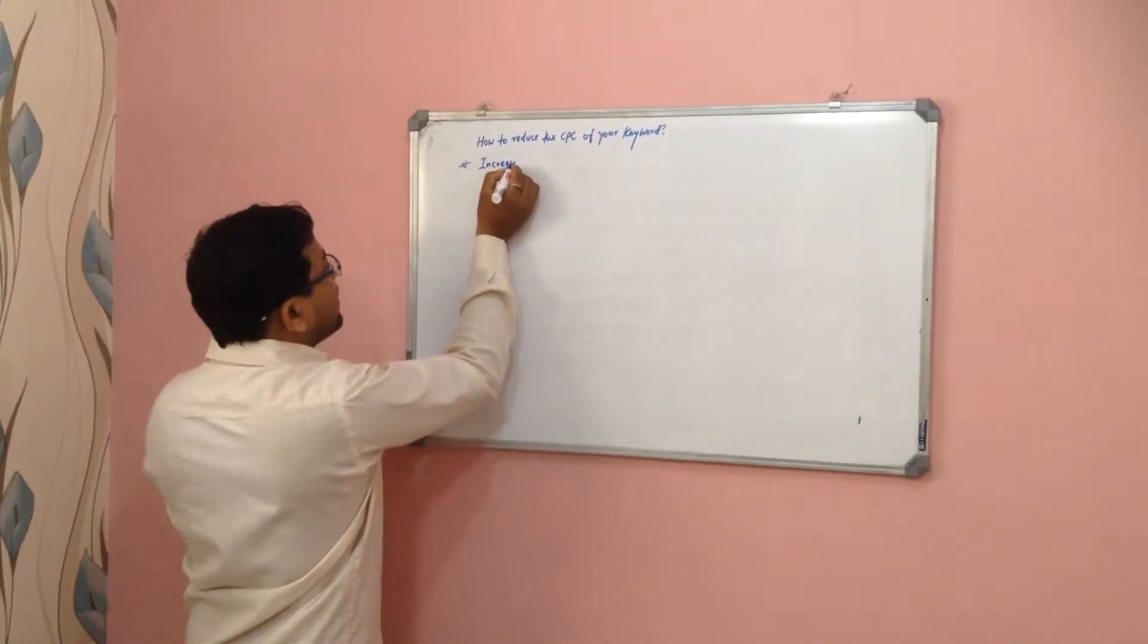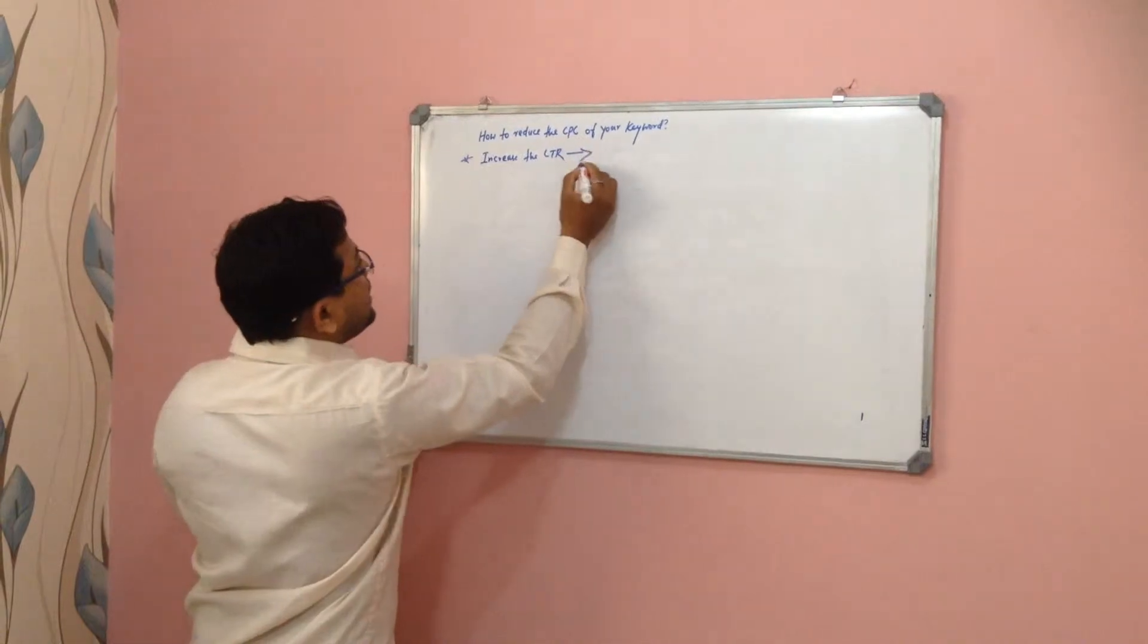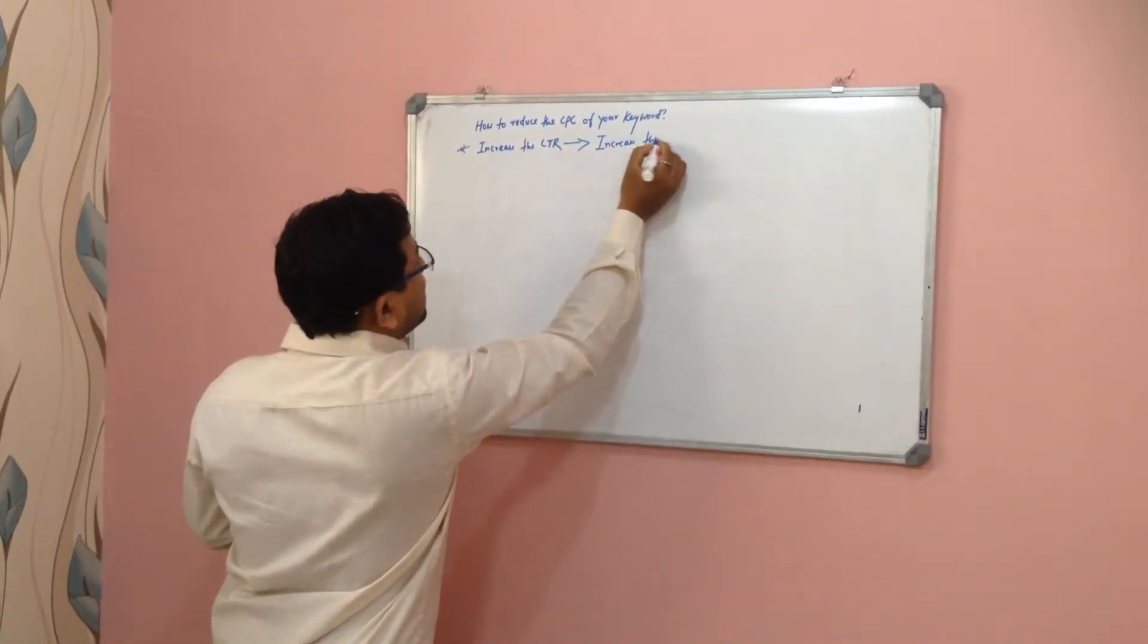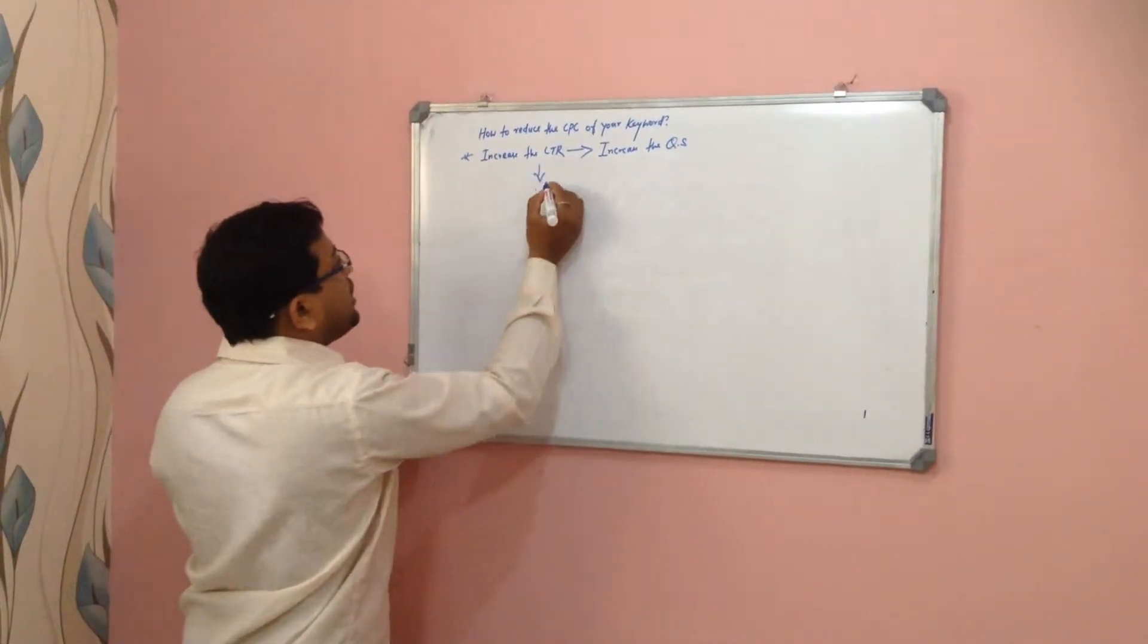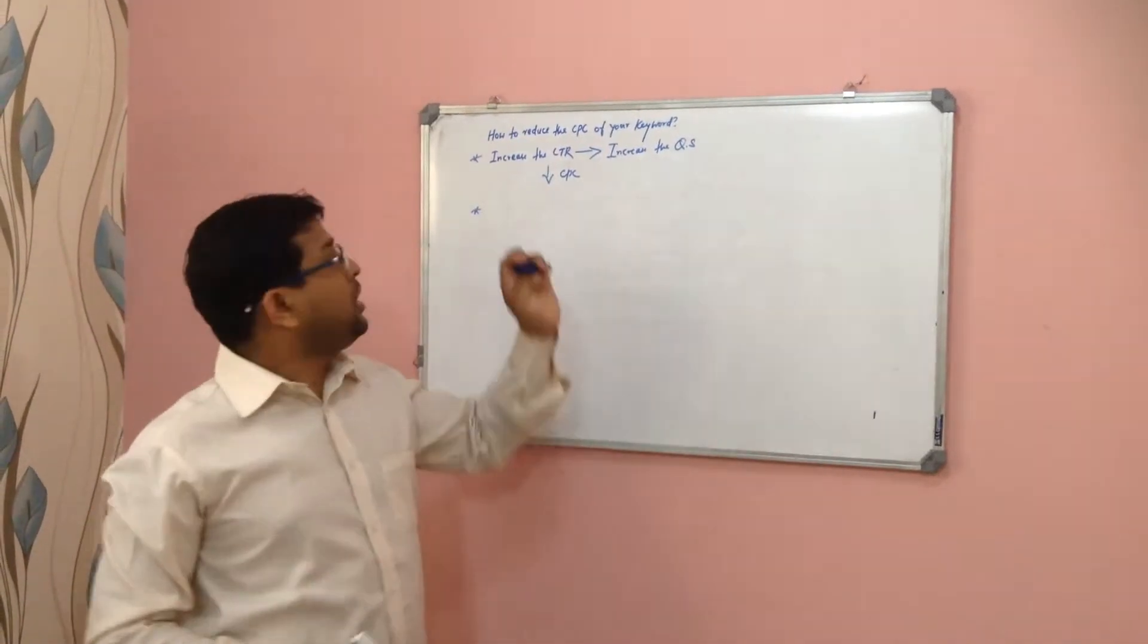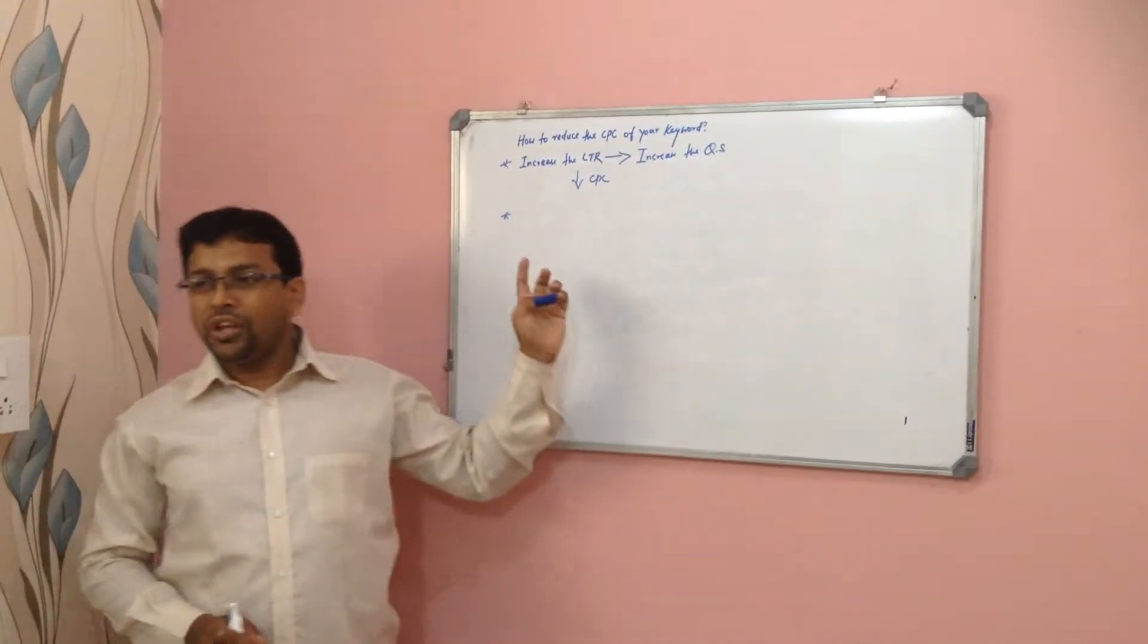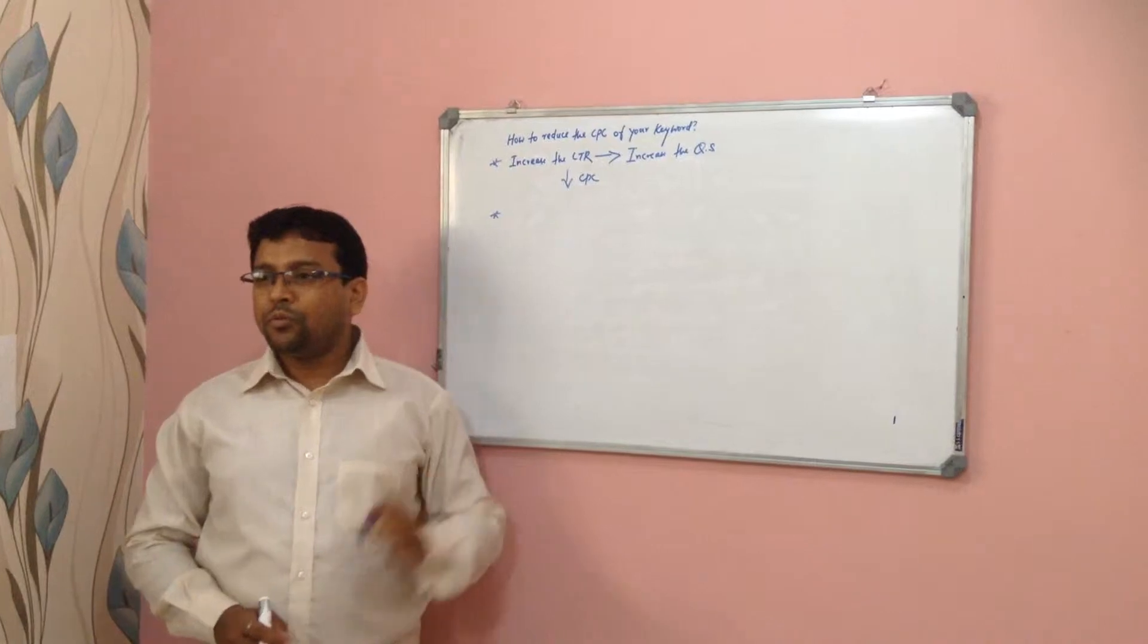Try to increase the CTR, and if you increase the CTR, it will increase the quality score. If the quality score is increased, it will reduce the CPC. So we know what are the steps used to increase the CTR. If you apply those steps, it surely helps us to get the required quality score for each of our keywords.